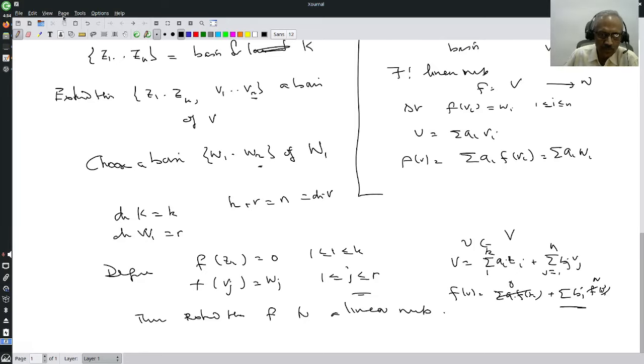Is it unique? By no means. I can choose any kind of basis here. You may choose some other basis W1 to Wr dash, I may choose some other basis, this extension may be some other thing V1 dash to Vr dash. Then I define F dash using this collection. Therefore, F of Vj dash will go to Wj dash and extend it linearly. Therefore, there exist many choices, it is not unique.